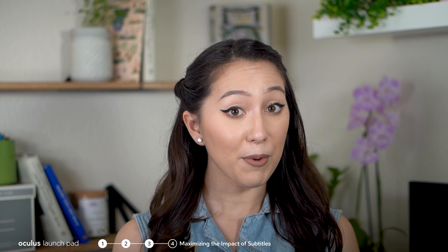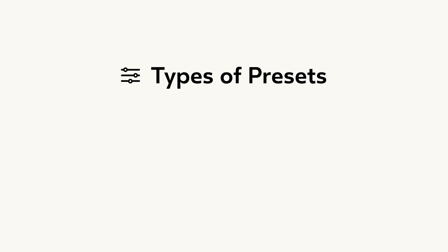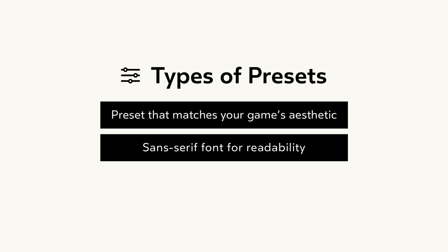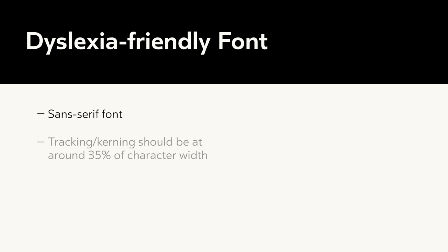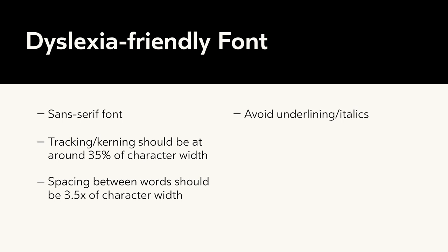Participants should also be able to choose how large subtitles are, allowing those with low vision to simply enlarge and brighten the subtitles until they are easy to read. When designing inclusive subtitles, it is considered best practice to have two to three presets the player can select from: one that matches your game's aesthetic, a sans-serif font for readability, and a dyslexia-friendly font as your third. For dyslexia-friendly fonts: use a sans-serif font, set tracking at around 35% of character width, set word spacing at 3.5 times character width, and avoid underlining or italics. Comic Sans is an example of a dyslexia-friendly font due to its lack of serifs, tracking, and word-to-word spacing.